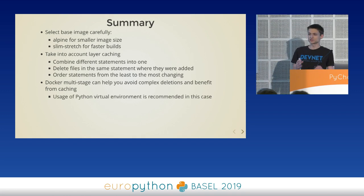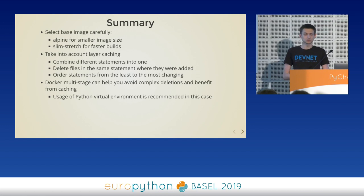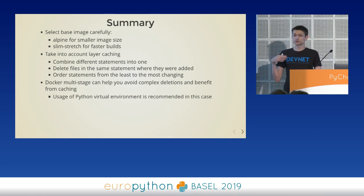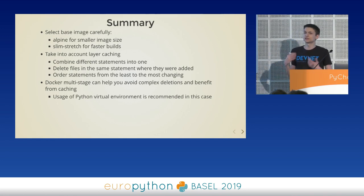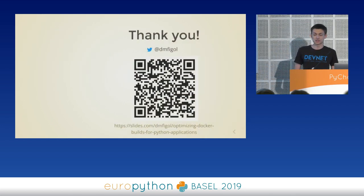In summary: first, select your base image carefully — Alpine for smaller image size, slim-stretch for faster builds. Take layer caching into account: combine statements into one, delete files in the same layer where they were added, and order statements from least to most changing. Docker multi-stage builds can help you avoid complex removal procedures and benefit from caching. If you go down that path, I recommend using Python virtual environments — it's really nice, even though I'm generally not in favor of virtual environments inside Docker containers.